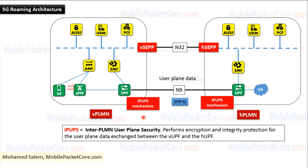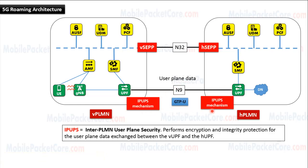Now let's take a look at the IPUPS mechanism used in the user plane connection between the visited network and the home network. IPUPS refers to Inter-PLMN User Plane Security and it protects the user plane data exchanged between the visited network and the home network, as it performs encryption and integrity protection for the user plane data exchanged between the visited UPF and the home network UPF. The interface between the visited and the home UPF is named N9 interface and it uses the GTP-U protocol. When the UPF in the visited network and the UPF in the home network exchange user plane data, they use the IPUPS mechanism in order to secure the user plane data exchanged between them.